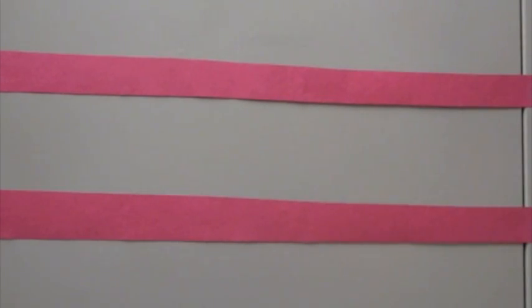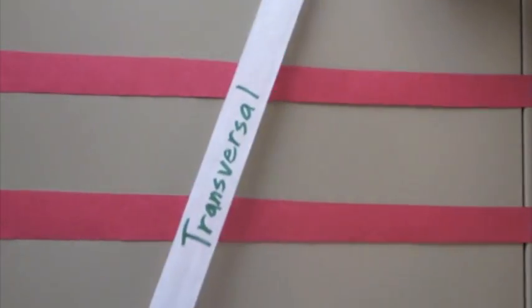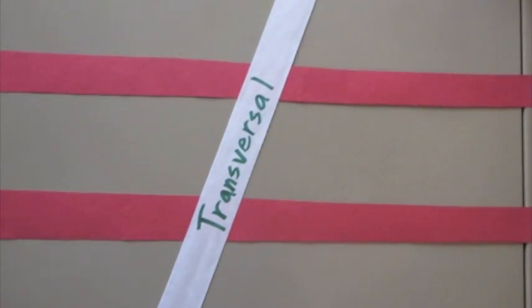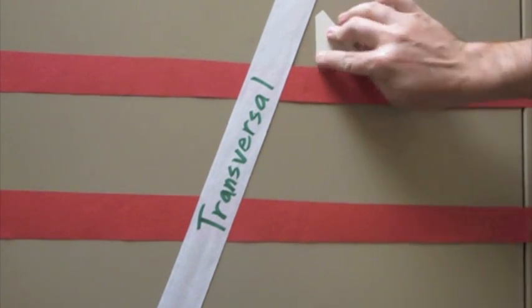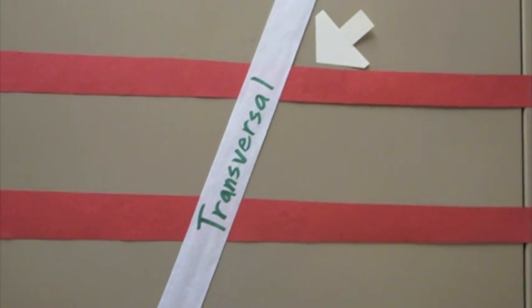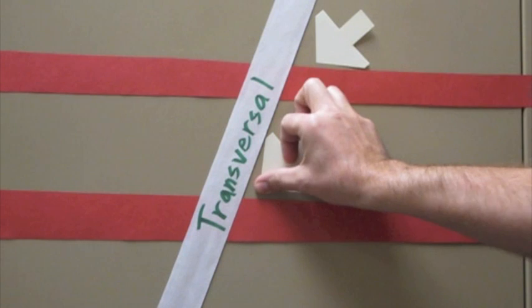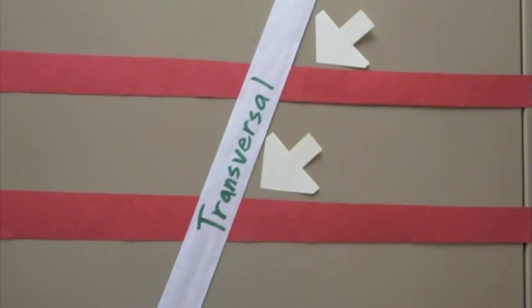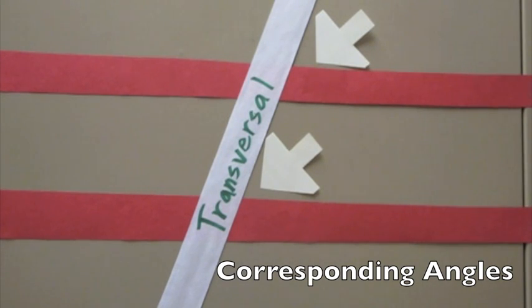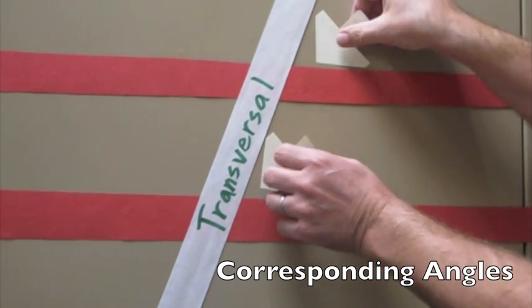So let me show you a different example. Here's another pair of lines, nothing special about them, until I put a transversal across them. Now we create a whole bunch of angles again, like I said before. And what matters to us is the angle pairs. I can identify an angle quite easily. Here's one in the upper right. There's another angle on the bottom line just like it. It's the one on the upper right on the bottom line. We call this pair of angles corresponding angles because they're the two angles that match each other, top and bottom.